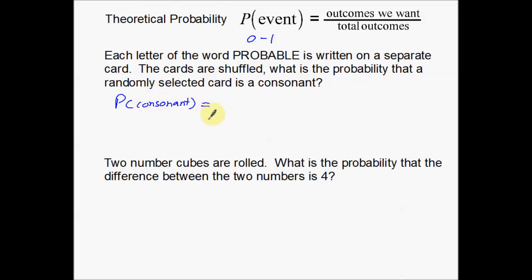In English, in a word, we have consonants and vowels. Vowels are the O, the A, and the E. The consonants are everything else: P, R, B, B, and L are my consonants.